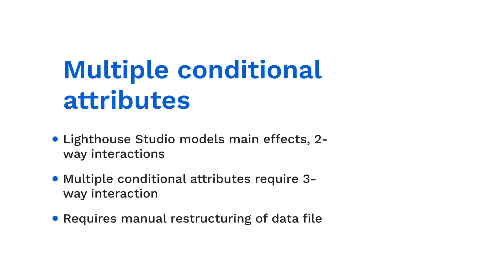Lastly, in our scenario we made price conditional on just one other attribute. Had we also made it conditional on other attributes, such as fencing or lighting, it would require a three-way interaction. Since our LOGIT, latent class, and CBC-HB programs are limited to modeling only main effects and two-way interactions, we would have to manually reformat the CBC data file and collapse all the conditional attributes prior to specifying the interactions with price.